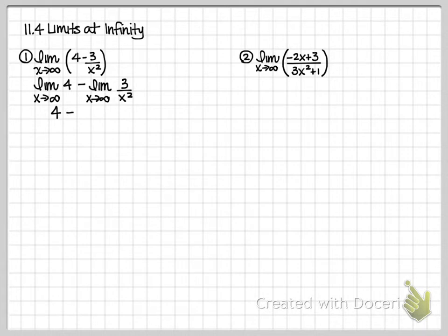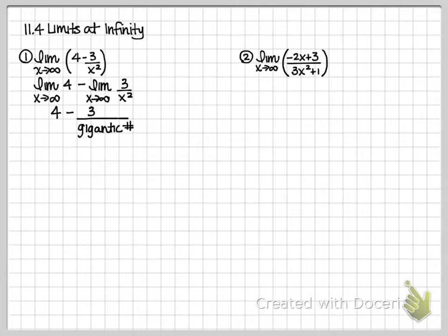The second one is going to give me 3 over a gigantic number — the biggest number I can think of, and then squaring it. So I'm going to get 3 over a huge number. Because I get this gigantic number in the bottom, we know that the larger the denominator, the smaller the fraction is going to be. So this is going to get really super close to 0.